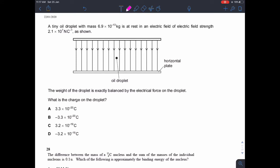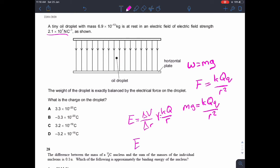A tiny oil droplet with that mass is at rest in an electric field. The weight of the droplet is exactly balanced by the electrical force on the droplet. So we know that the weight is mg. And we know that's exactly balanced by the electrical force. Electrical force is kqq over r squared. So mg equals kqq over r squared. Now you don't have any of that. All you've got is the electric field strength. But the electric field strength is given by the change in potential over the change in r, or the potential gradient. And the potential is kq over r. So the electric field strength, therefore, could be represented by kq over r squared. So if you sub the electric field strength in for those values, then you get mg equals e times q.